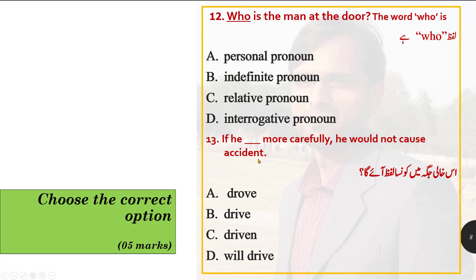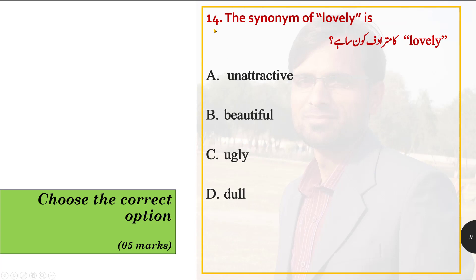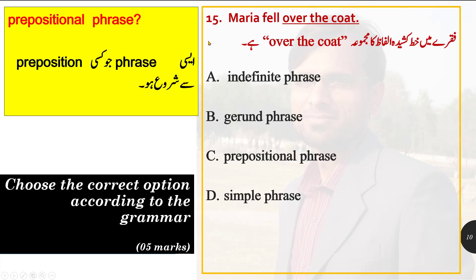Option number 14: the synonym of 'lovely' is? Options are: unattractive, beautiful, ugly, dull. Option B — beautiful — is correct, because the synonym of 'lovely' is 'beautiful' (خوبصورت). We select option B: beautiful.